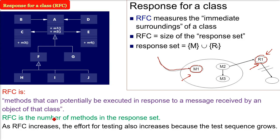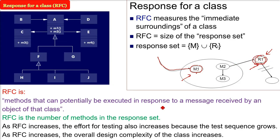So RFC is the number of methods in this response set. As this RFC will increase, the effort of testing also will increase, because the test sequence will grow. Because some input is coming here, others will be invoked or called. So as the RFC will increase, the overall design complexity of the class will also be bound to increase. Like R1, R4, R3, they will also get invoked.